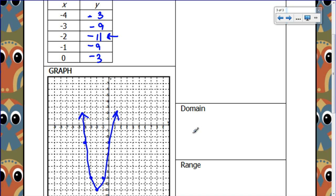The domain, it's got arrows on the ends, so it's all real numbers. Because it's concave up, my range is greater than or equal to the y-coordinate of that vertex, which is negative 11.